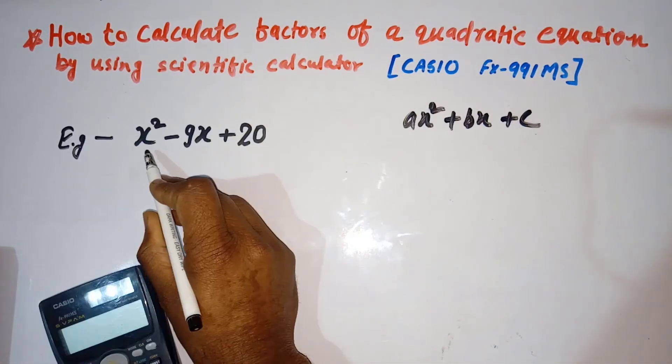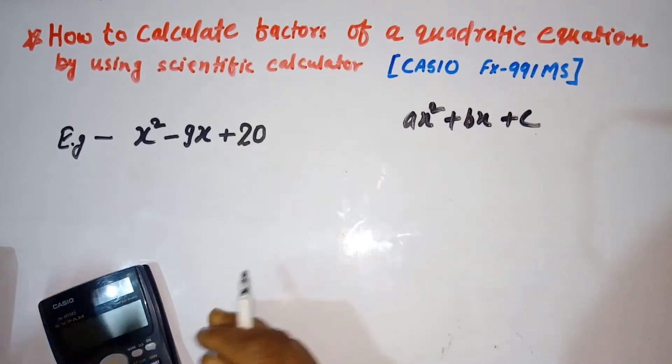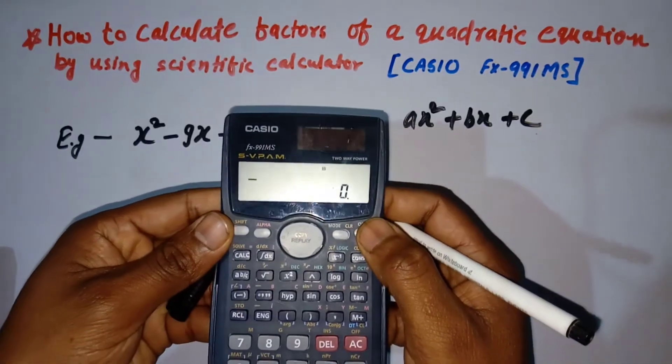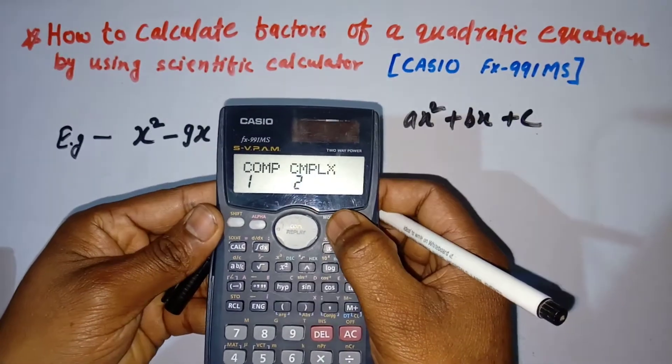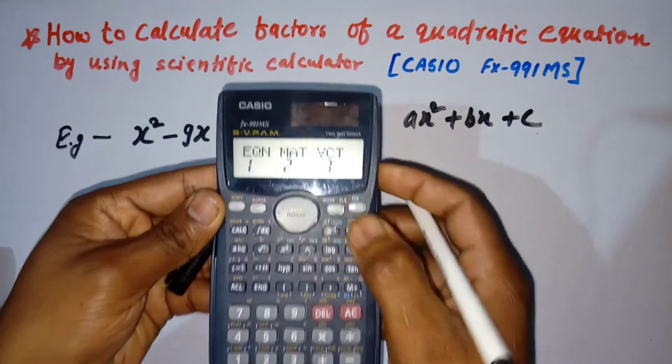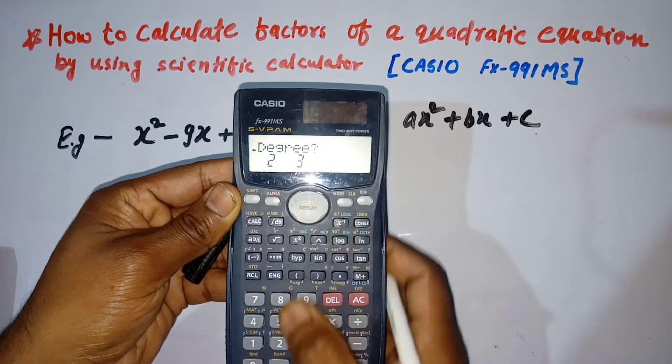Suppose we have to calculate factors of x² - 9x + 20. First, switch on the calculator, then press the mode button three times, then press 1, press the left button, and press 2.